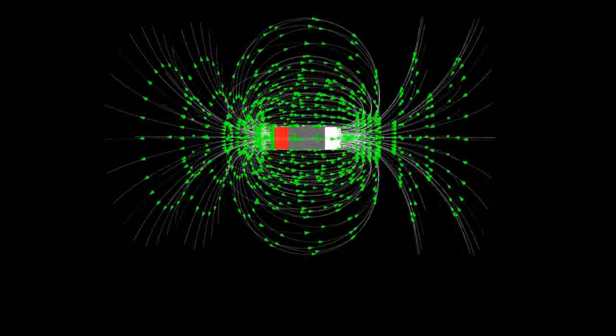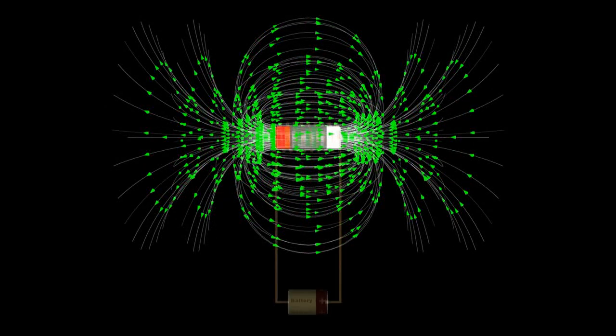We now know that we can generate current using magnetic fields, but we can also generate magnetic fields using current. How does this happen?